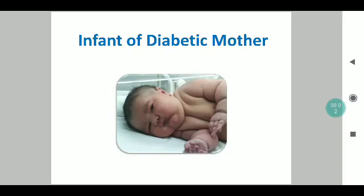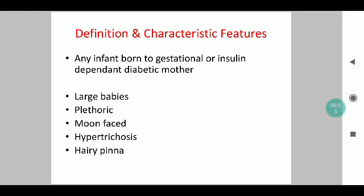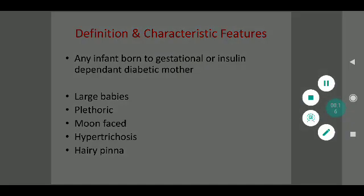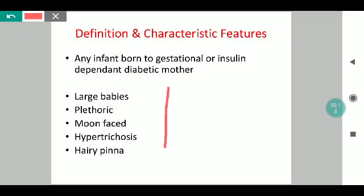Hello everyone. This presentation is on infant of diabetic mother. By definition, it is any baby who is born to a gestational diabetic mother or to a mother who is insulin dependent. Characteristically, it is seen as large babies, babies who are plethoric, who have a moon face, hypertrichosis or a hairy pinna, but a large baby is generally synonymous with an IDM baby.